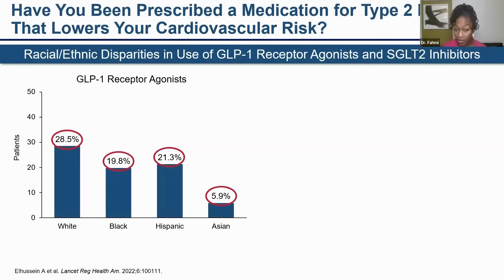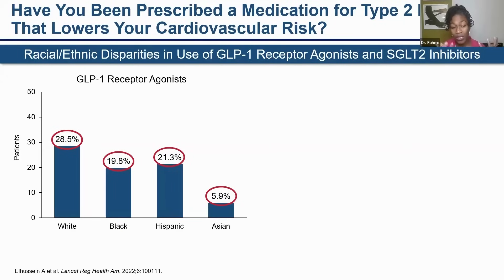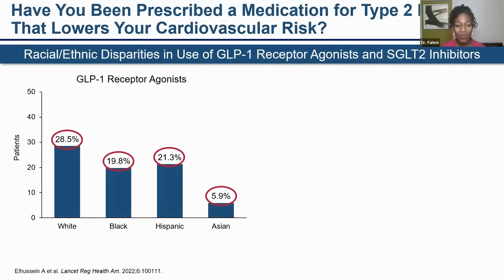An important question is whether you've been prescribed a diabetes medication that also lowers cardiovascular risk. Looking at racial and ethnic disparities in the use of GLP-1 receptor agonists: 28.5 percent of white patients, 19.8 percent of Black patients, 21.3 percent of Hispanic patients, and 5.9 percent of Asian patients are on this class. Black patients at 19.8 percent represent a significant disparity, especially given their higher risk for cardiovascular death and stroke.